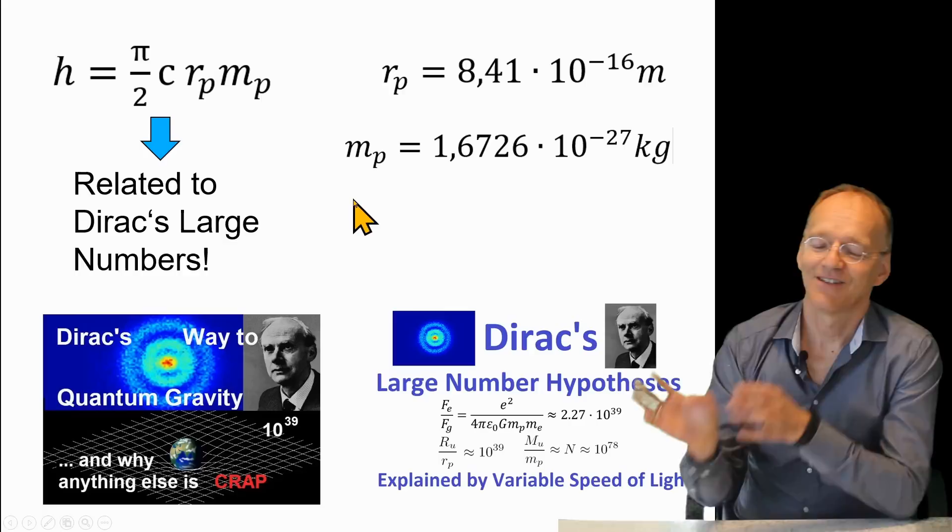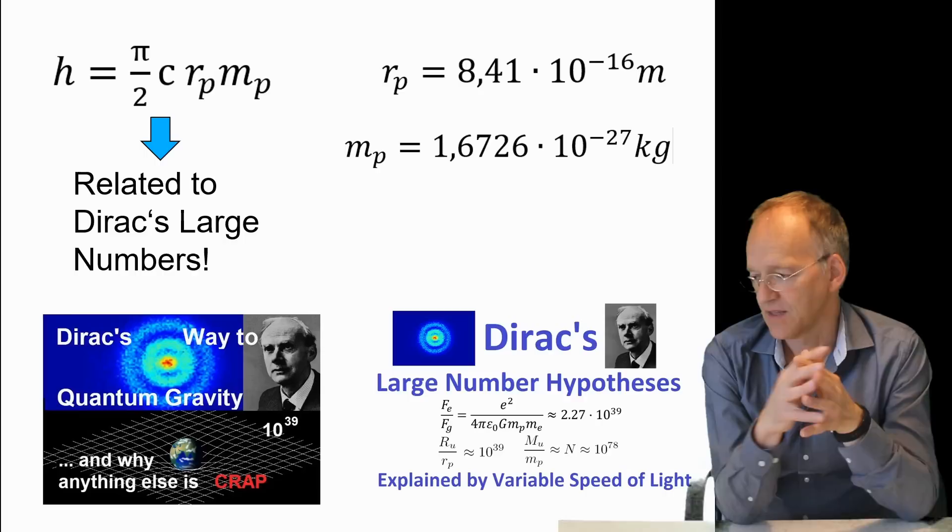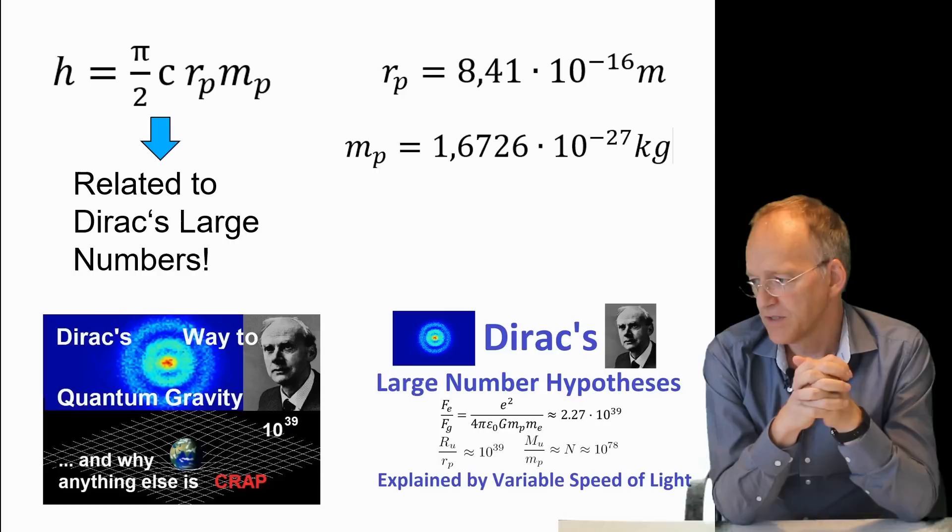That is a relation which is equivalent to Dirac's large numbers, as I explained in this video. On the other hand, Dirac's large numbers also can be explained or understood in the context of variable speed of light. This is again the idea of linking the small scales to the large scales in the universe.